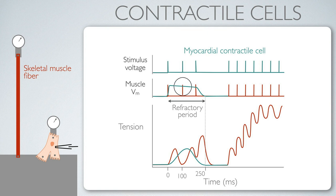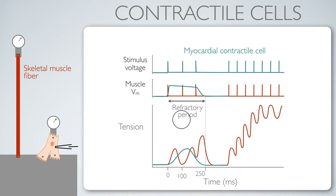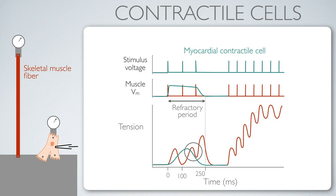This refractory period is triggered by that first action potential. When the subsequent second and third action potentials arrive, they have no effect on the membrane — the membrane is insensitive, which is what it means to be within a refractory period. So this tension would be the same whether there were one action potential, three action potentials, or fifteen — because the contractile cell is insensitive to action potentials that follow the first one.